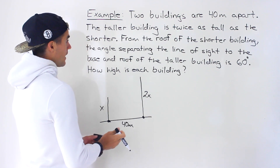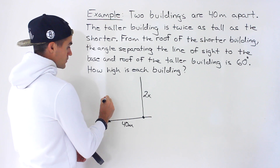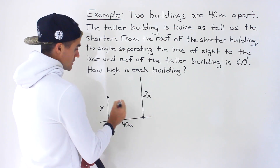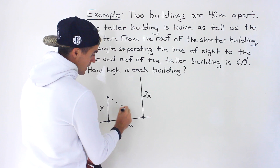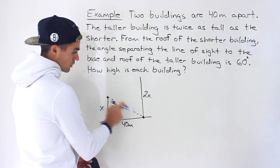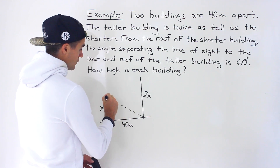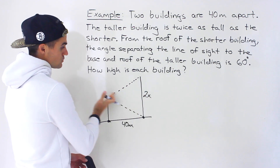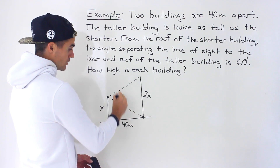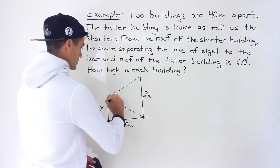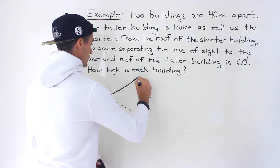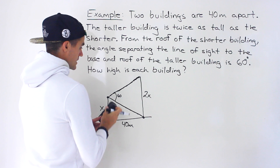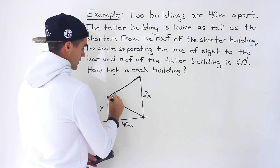From the roof of the shorter building, the angle separating the line of sight to the base and the roof of the taller building is 60 degrees. So we draw two lines of sight: one from the roof of the shorter to the base of the taller, and one from the roof of the shorter to the roof of the taller. The angle between these two lines of sight is 60 degrees.